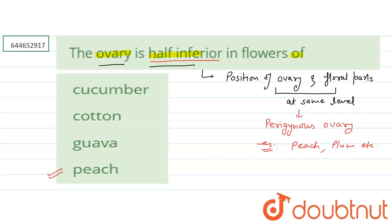Amongst the options, peach should be the right one. But before concluding, let's understand what kind of ovary is present in cucumber, cotton, and guava.